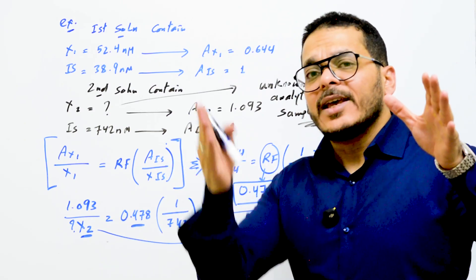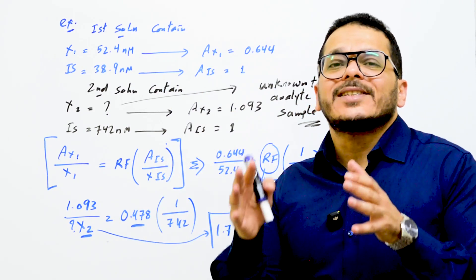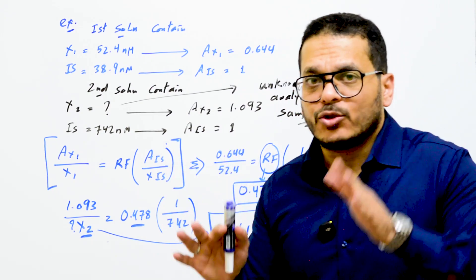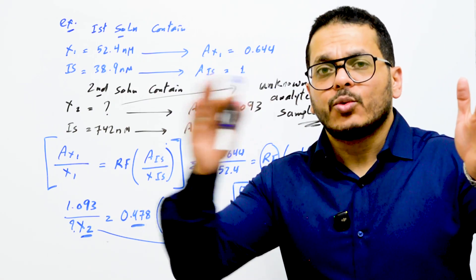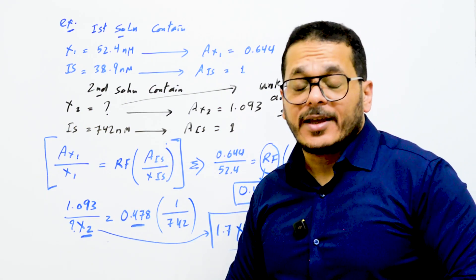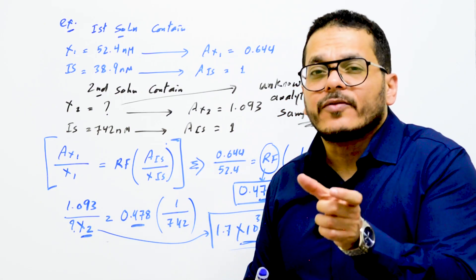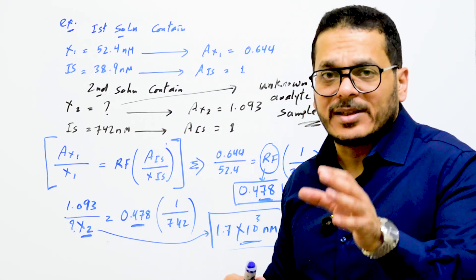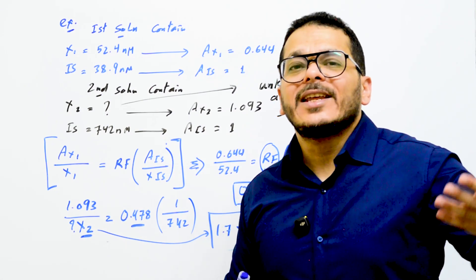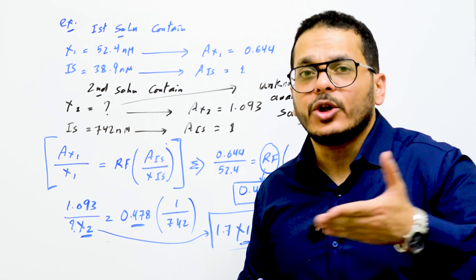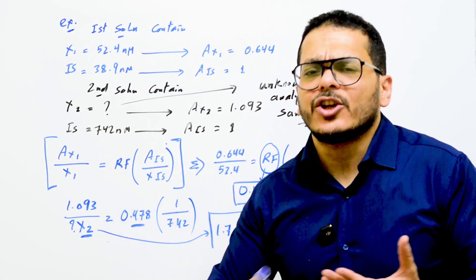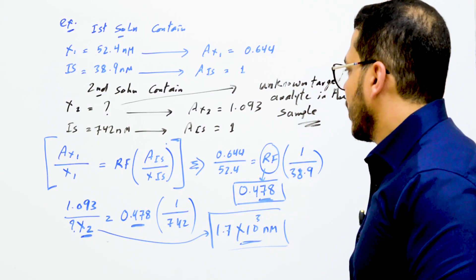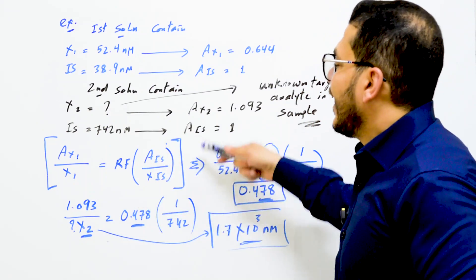Both of those ratios divided give you the slope, which is the response factor. This response factor will not change — any effect that happens to the internal standard will be the same for the analyte, so the response factor remains constant. It stays constant whether there is a systematic effect from matrix interference or a random effect from instrument fluctuation or any other effect occurring during the run of samples on the instrument.